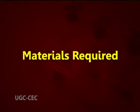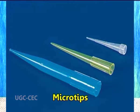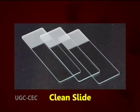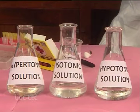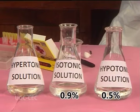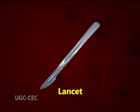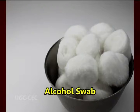With this information, we go for a practical demonstration. Materials required: micropipets, microtips, microscope, clean slides, NaCl solutions — that is 0.5%, 0.9% and 1.2% — materials for venous puncture, cotton, lancet and alcohol swab.